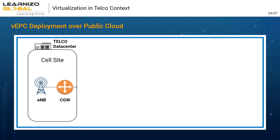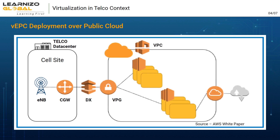It is also possible to deploy vEPC — that is, virtual EPC — on public cloud infrastructures like AWS, Azure, or Google. For example, we can use Amazon EC2, which is a compute instance, to host applications like MME and SPGW.